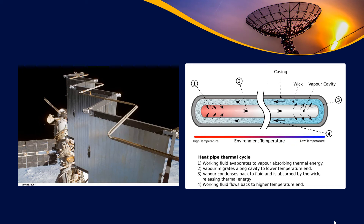On the International Space Station they have these big giant radiators. These are designed to have as little sunlight on them as possible. What they do is take heat in from the spacecraft and transmit it out into space through radiation.